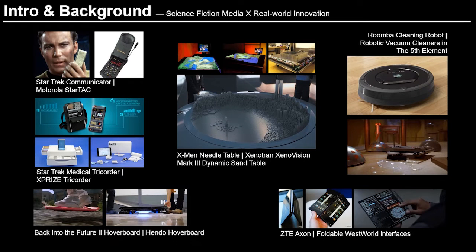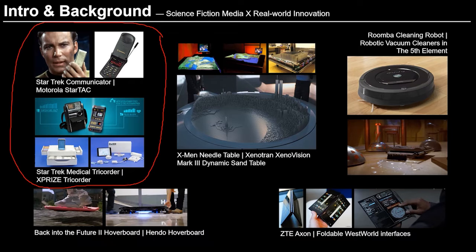Let's become a little bit more concrete and highlight some links where science fiction media and real-world innovation link up, align, or collide. We see here on the top left two examples from Star Trek, one of the biggest science fiction franchises in the world. We see the Star Trek communicator as used by James T. Kirk in the original series in the mid-60s, and the first clamshell phone, the Motorola StarTAC, introduced in the 90s. We also see the medical tricorder as depicted in Star Trek: The Next Generation, which inspired the XPRIZE Foundation to donate five million dollars for the development of a real-world medical tricorder prototype.